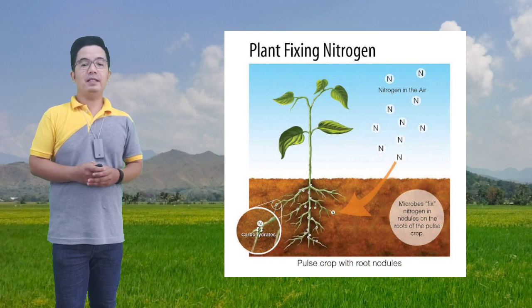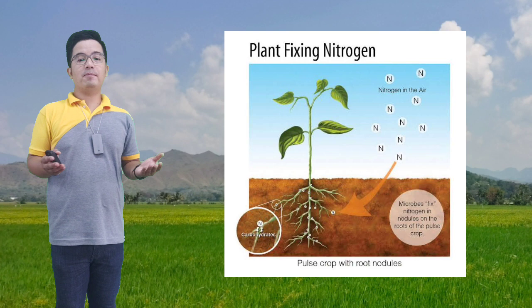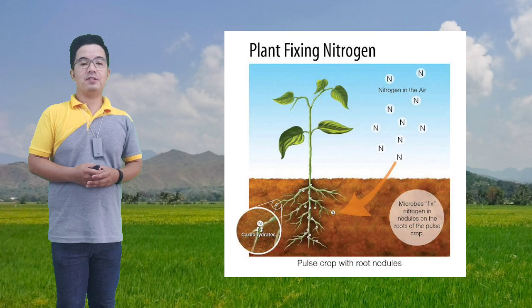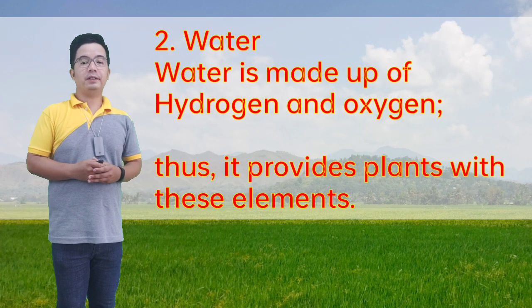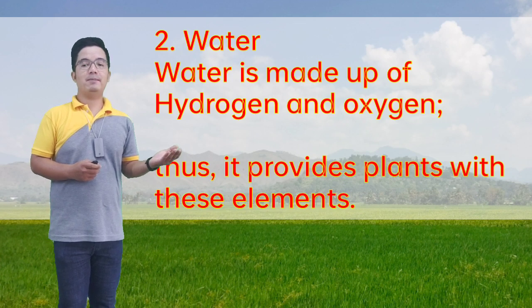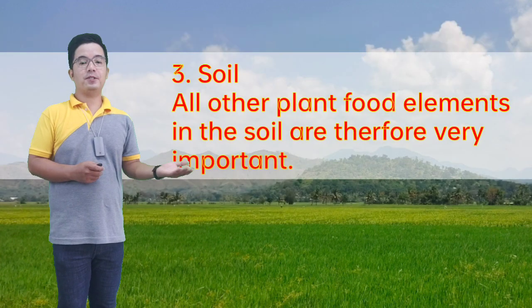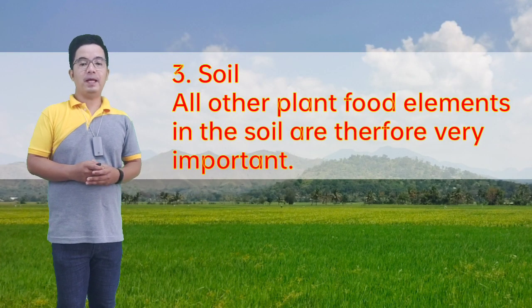Legumes — the bacteria in their nodules, which develop in their roots as a result of inoculation, can fix and utilize nitrogen from the atmosphere. Number two, we have water. Water is made up of hydrogen and oxygen; the water provides plants with these elements. Number three, we have the soil. All other plant food elements in the soil are therefore very important.